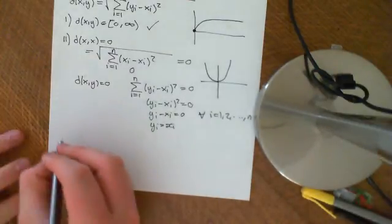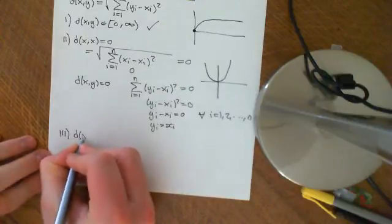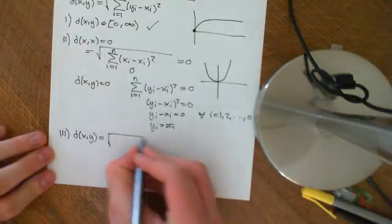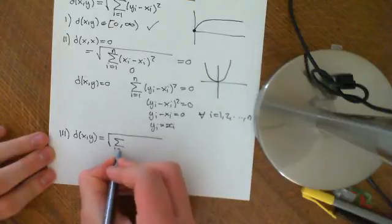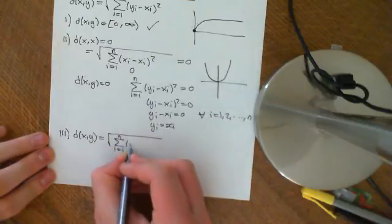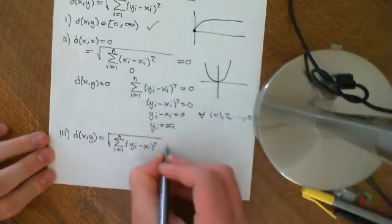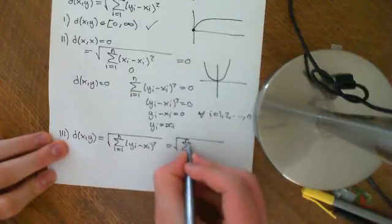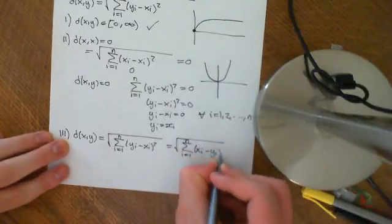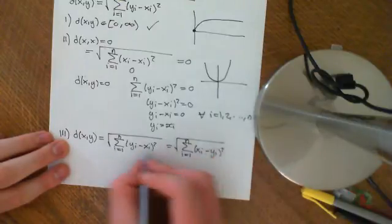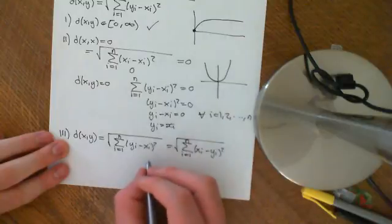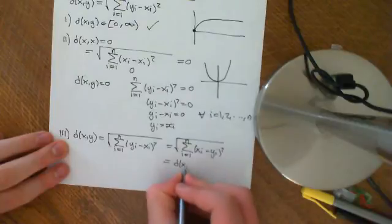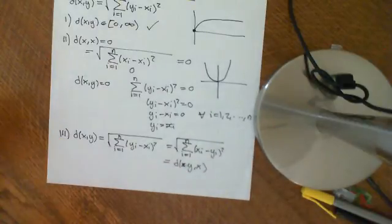Axiom 3: d(x, y) = d(y, x). We have d(x, y) = √(∑ᵢ₌₁ⁿ (xᵢ − yᵢ)²). Since (xᵢ − yᵢ) is just the negative of (yᵢ − xᵢ), and squaring a negative number gives a positive number, these two expressions are exactly equal. So d(x, y) = d(y, x), and it obeys the symmetry property.